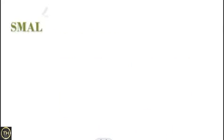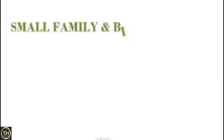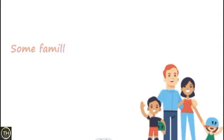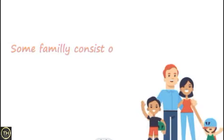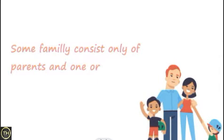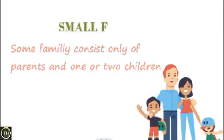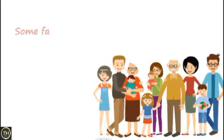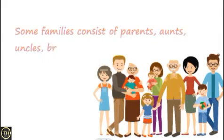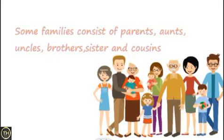First, we will see about small families and big families. Some families consist only of parents and one or two children — such families are called small families. But some families consist of parents, aunts, uncles, brothers, sisters and cousins. Such families are called big families.